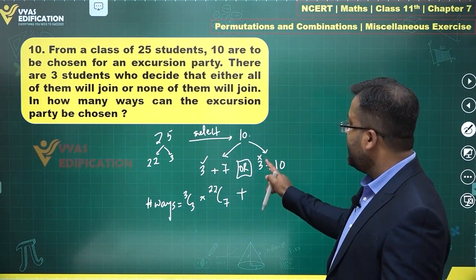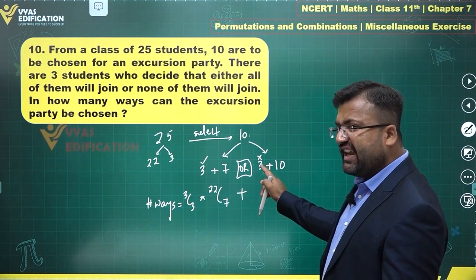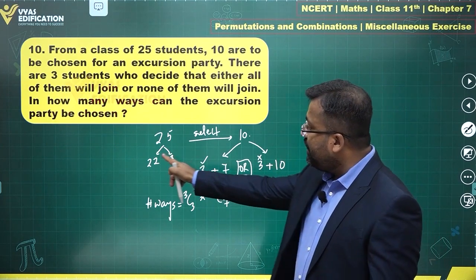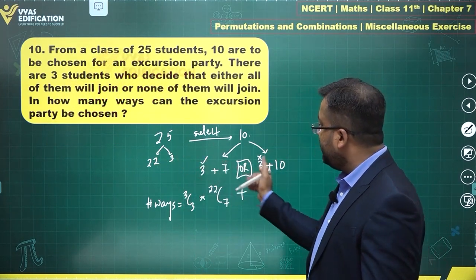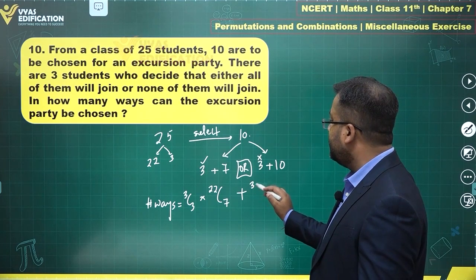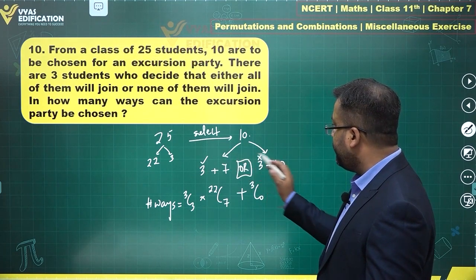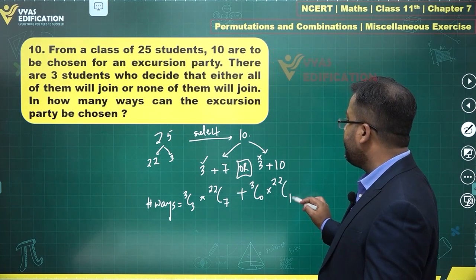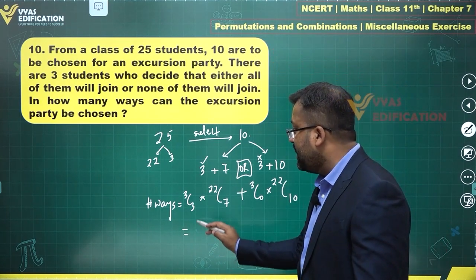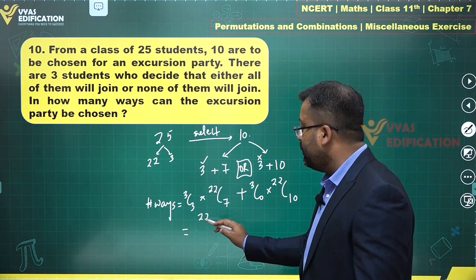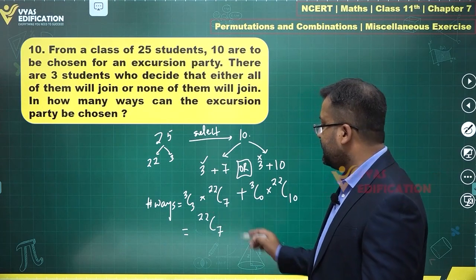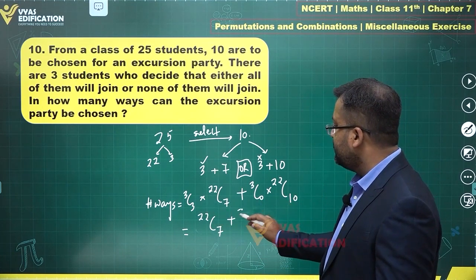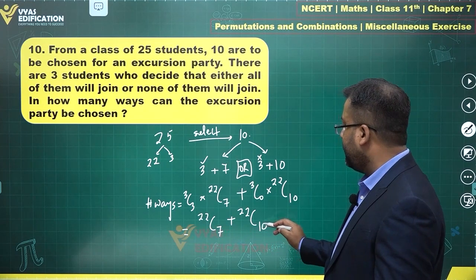Plus — because of the 'or' — if those three are excluded, you have to choose the remaining 10 from these 22. Out of those three, none are chosen, that's 3C0, and out of 22 you select 10, so this is 22C10. So the number of ways would be 3C3 × 22C7, which is 1 × 22C7, plus 3C0 × 22C10, which is 1 × 22C10.